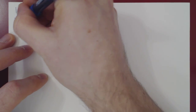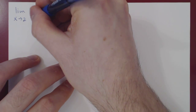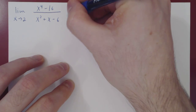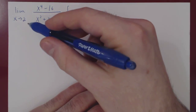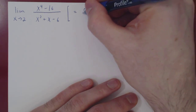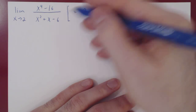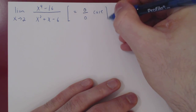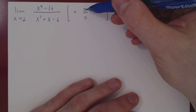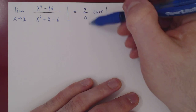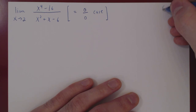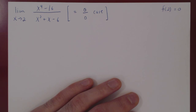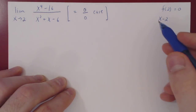Now let x approach positive 2, with the function (x⁴ - 16) / (x² + x - 6). We look at our case: 2⁴ = 16, minus 16 is 0; and 4 + 2 - 6 = 0. So once again we have an indeterminate case in the form of 0 over 0. Both polynomials are 0 at x = 2, so by the factor theorem our free factor is x - 2, and both polynomials are divisible by x - 2.